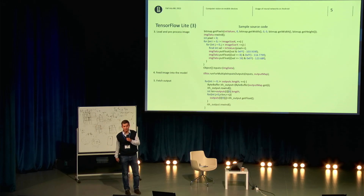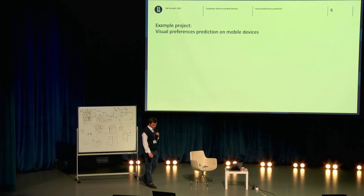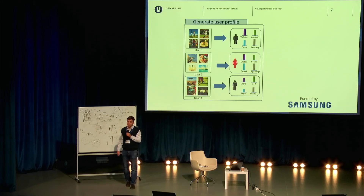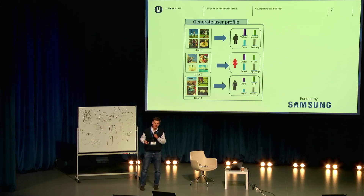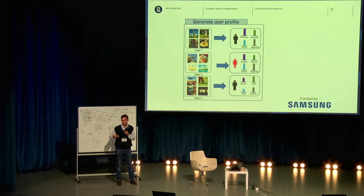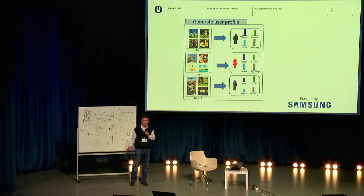Let me show you some results from my project with Samsung about implementing image understanding on mobile devices. The task was to generate a user profile based on the gallery of photos on your own device. Everyone has a smartphone, and maybe you enjoy making photos of what you like. Maybe you are very interested in visiting this conference and made photos of all the speeches — in that case, it's possible to understand and predict that you are a student or professor at some university.